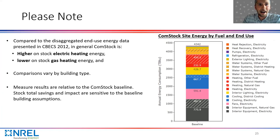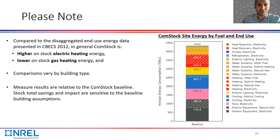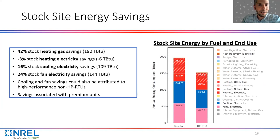Now for some results from the Comstock tool. CBECS is one of the data sources we compare Comstock results against. Compared to CBECS, we are higher on electric heating energy and lower on gas heating energy in Comstock. When looking at stock results, it's hard to say who is closer — these are all estimates. We want to be responsible and call that out, as it can impact stock-level savings results.